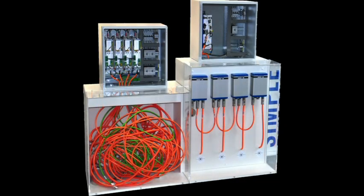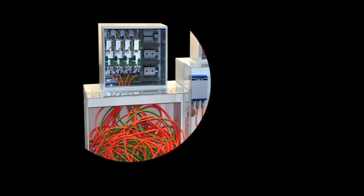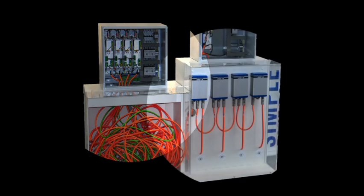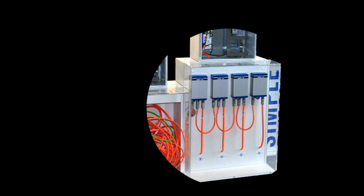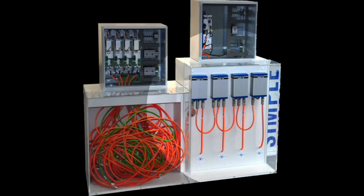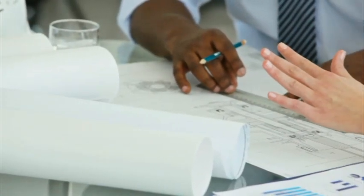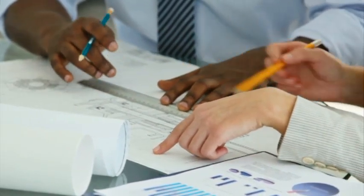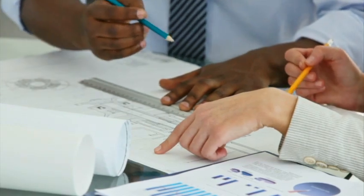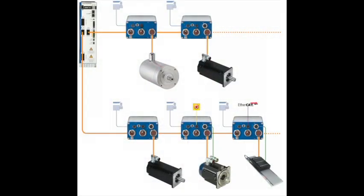Absolutely, and even more. Decentralized control architecture means shifting the servo drives from the crowded cabinets and moving them near the motors out on the machine where the action is. Immediately you can see that this can reduce the size of the controls cabinet, moving all of those drives out onto the machine. But how do I see these other advantages? It's not just about moving the drives out onto the machine near or integrated with the motors, but also how you design your entire control system.